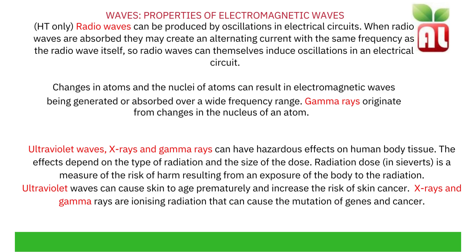Gamma rays originate from changes in the nucleus of an atom in nuclear radiation, where an unstable isotope will decay. Ultraviolet waves, X-rays and gamma rays can have hazardous effects on human body tissue. The effects depend on the type of radiation and the size of the dose. Radiation dose is a measure of the risk of harm resulting from exposure of the body to radiation. Ultraviolet waves can cause skin to age prematurely and increase the risk of skin cancer. X-rays and gamma rays are ionising radiation that can cause mutation of genes and cancers, forming abnormal cells.